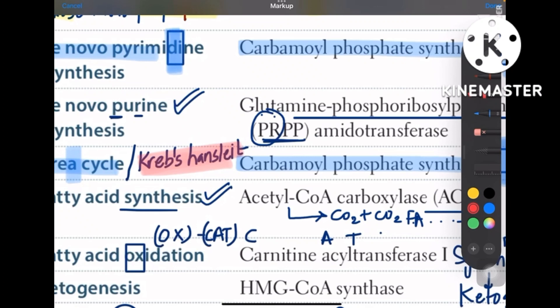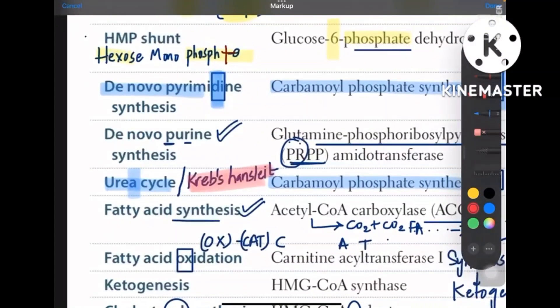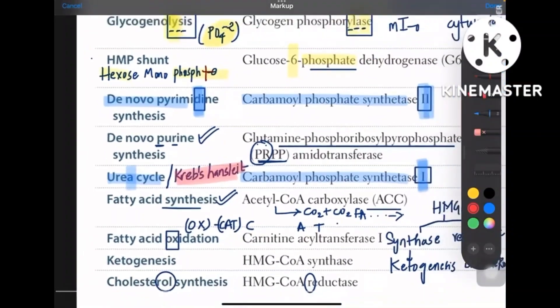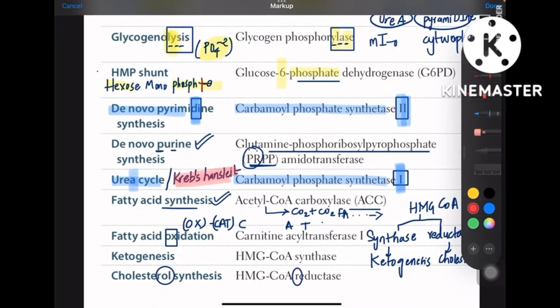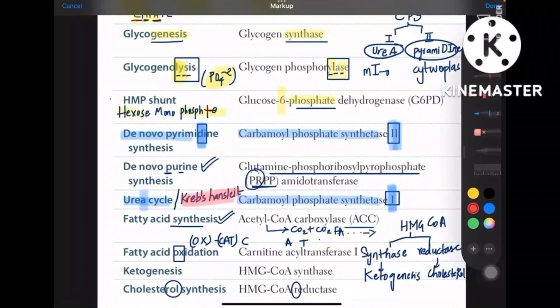So I have discussed few cycles from this chart already on my YouTube channel, so you can go and watch those videos. So remember that Krebs cycle is for citrate, that is TCA, whereas Krebs handset is for urea cycle.